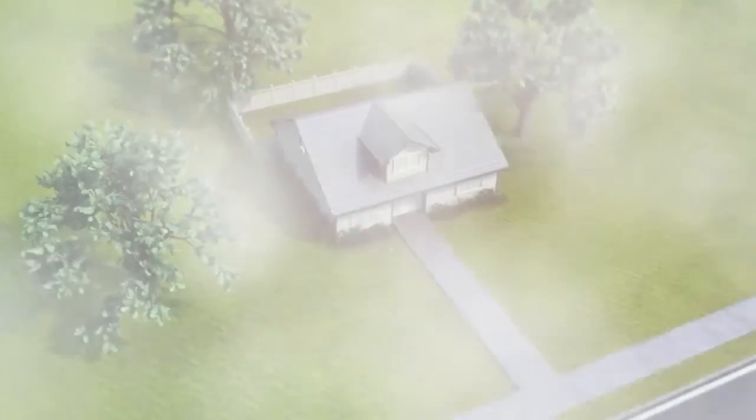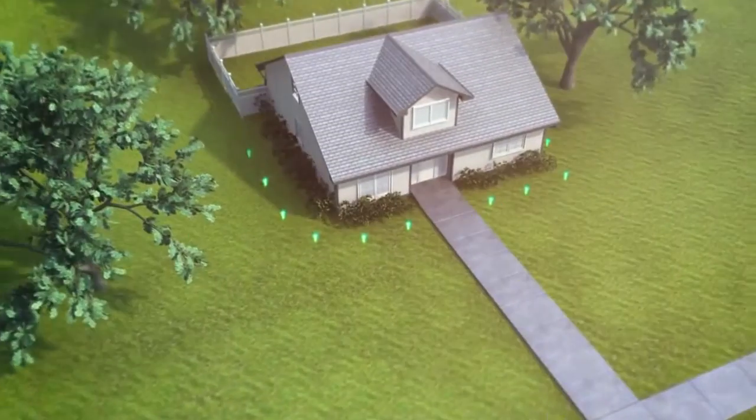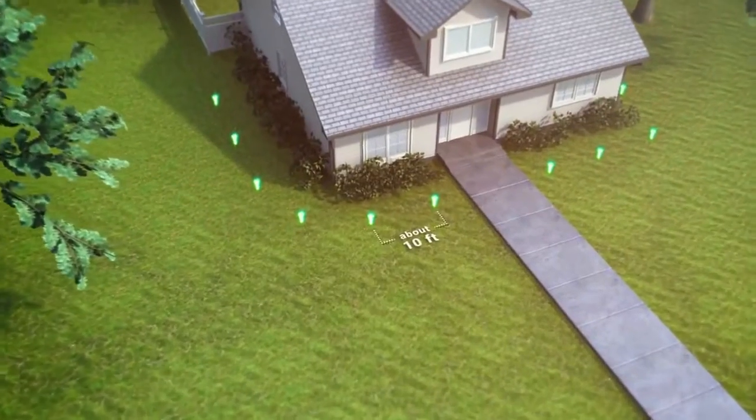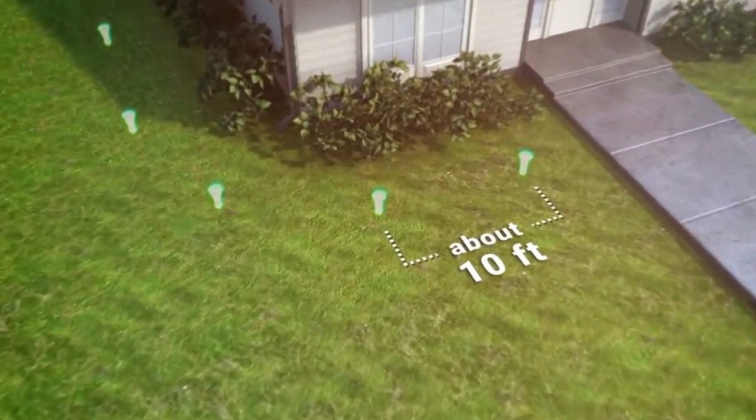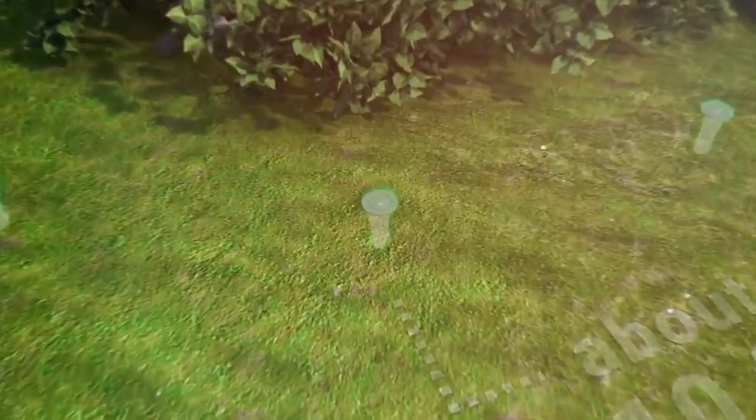The Centricon system places bait stations in the ground about every 10 feet around the home. This bait placement and spacing is effective because of how worker termites explore.